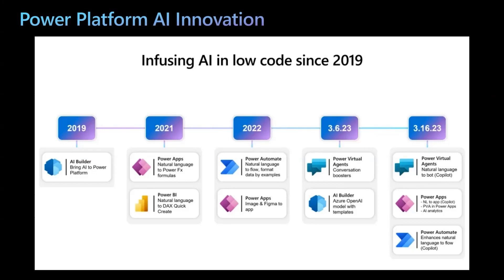In year 2022, we introduced AI in Power Automate flows, which helped us write complex expressions with simple language and also added express design capability. Recently, we announced multiple new AI capabilities like Copilot, Conversation Boosters, and new AI Builder models after the public availability of GPT-3 and ChatGPT. So let's click down on all of these AI features to get an understanding of how AI is helping citizen developers and end users of this platform.